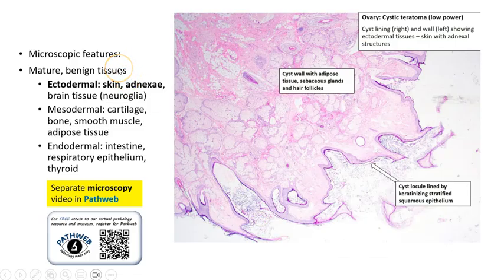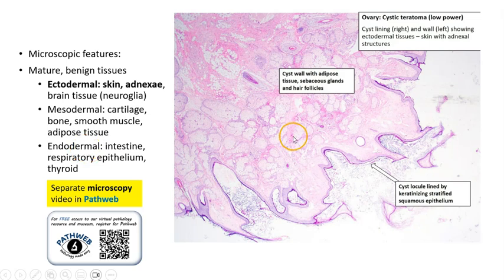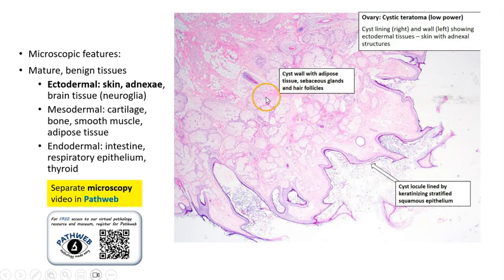I will run through the microscopic features here briefly. However, there is a separate microscopy video in PathWeb demonstrating a virtual microscopy slide. In a mature cystic teratoma, we can see benign tissues that arise from any of the three germ cell layers. For example, we can see skin keratinizing stratified squamous epithelium with adnexal structures, which are the pilosebaceous glands — and this is where the hair arises from.